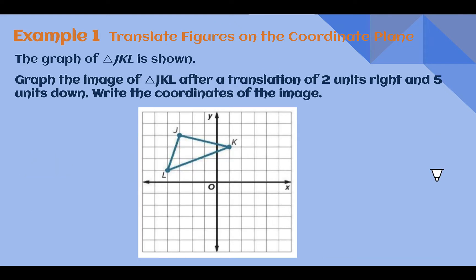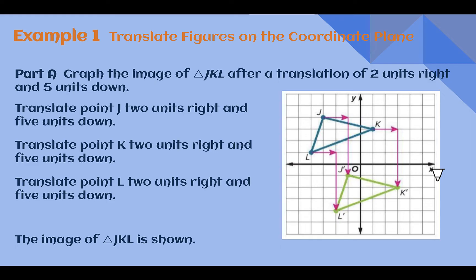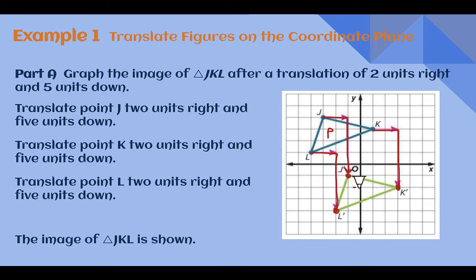Example one: translate figures on the coordinate plane. The graph of triangle JKL is shown. Graph the image of triangle JKL after a translation of two units right and five units down. Write the coordinates of the image. Starting at point J, two units to the right and five units down, we end up at point J prime. Doing the same to K — two units right, five units down — we get K prime. And for L, following the same path, two to the right and five down, we get L prime. So we have our pre-image and our image after it was moved two units right and five units down.